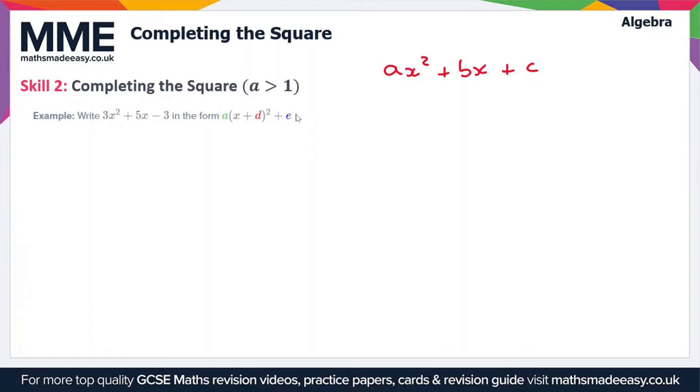I'm going to rewrite the expression first of all: 3x² + 5x - 3. The first thing I'm going to do is factorize this first part of the expression.